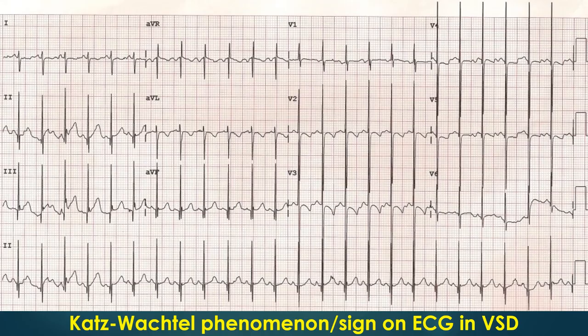The Katz-Wachtel phenomenon, also called the bar sign, consists of tall diphasic RS complexes at least 50 mm in height in leads V2, V3, or V4 — that is, the mid precordial leads. This sign has been described in VSD with large left to right shunt and biventricular hypertrophy in children.